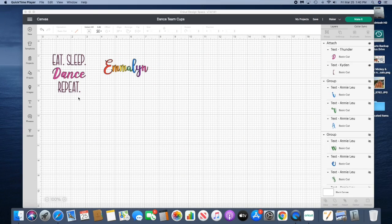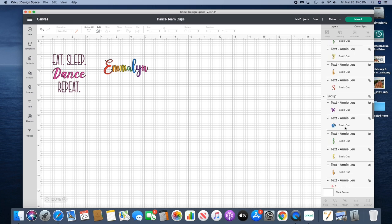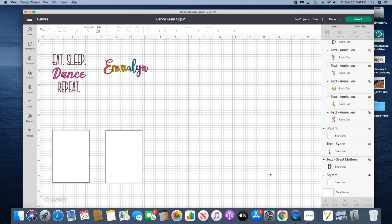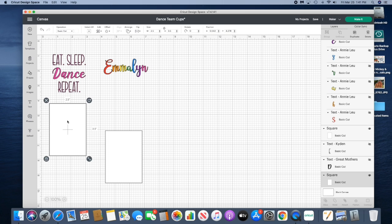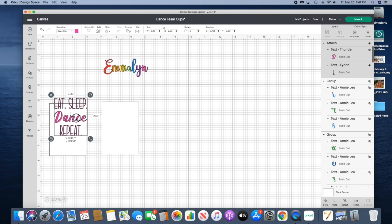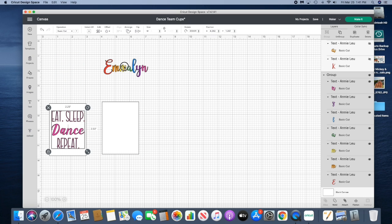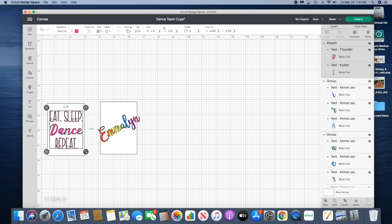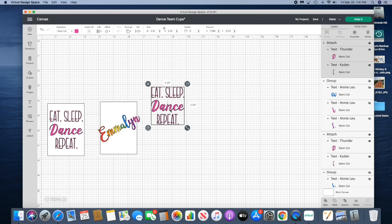So this is the design that my friend wanted. The eat sleep repeat is in a font called Kaden K-Y-D-E-N and the dance is in Thunder and Emelin is in Annie Louv L-E-U and I think I downloaded these from Creative Fabrica. So the first thing I did was I made templates for the cup and I just made a rectangle 2.5 by 3.5 and pretty much just centered it, got it to where I wanted it that it would look nice centered on this template. So for the new cup we're just gonna copy it and I'm gonna unattach.